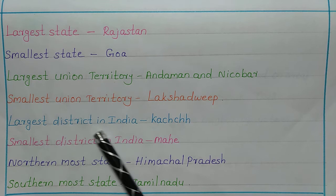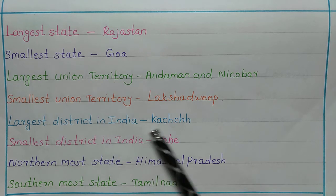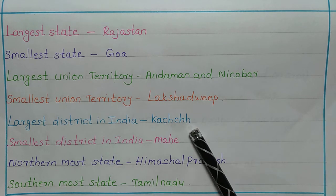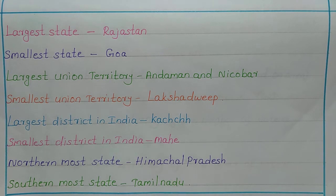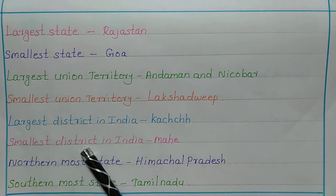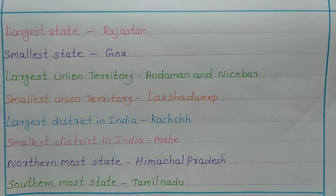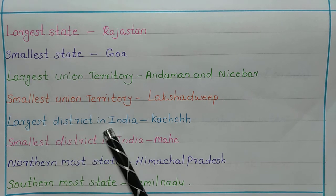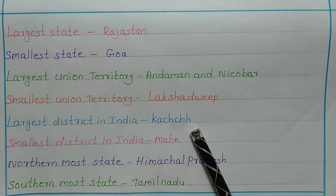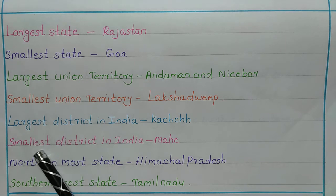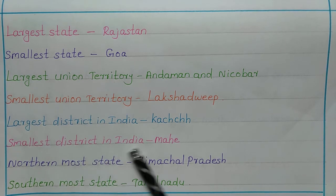The largest district in India is Kutch, and the smallest district in India is Mahe.